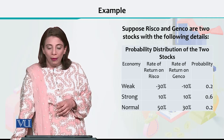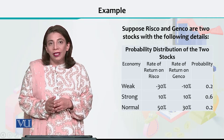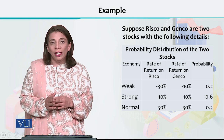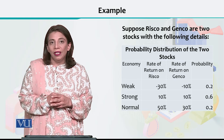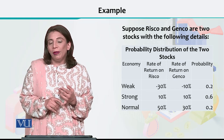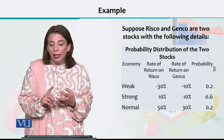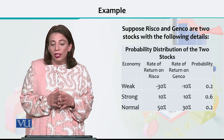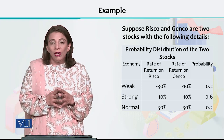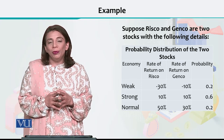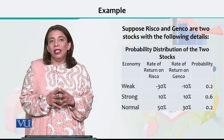You can see in the table: we have the economy states, then in the second column we have the rate of return for RISCO across those three possible states. In the third column we have the rate of return on GENCO, and in the last column we have the corresponding probabilities.